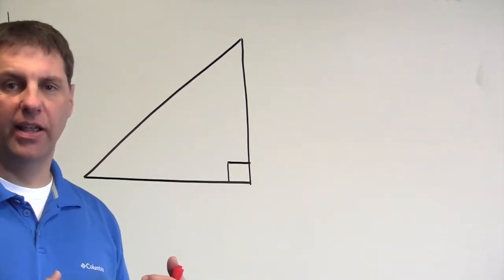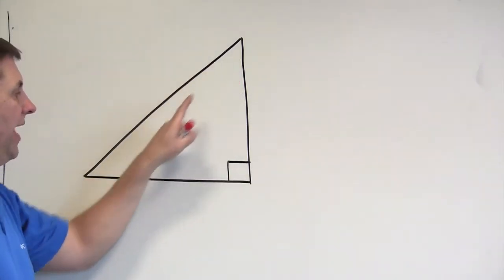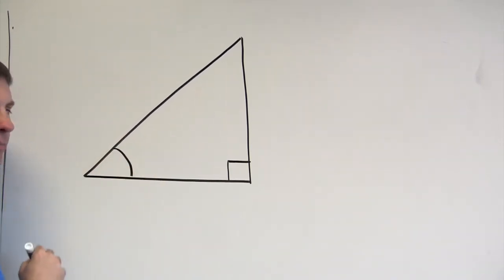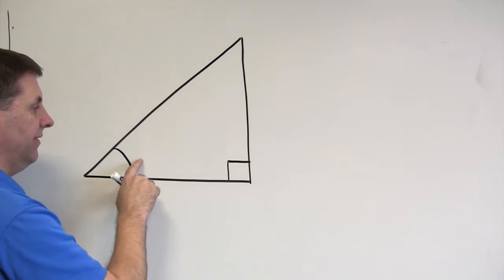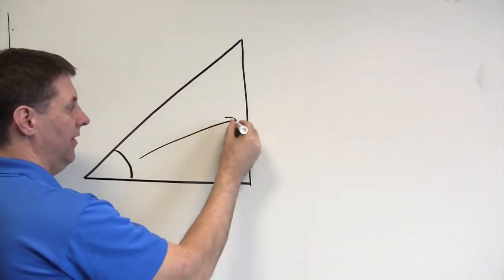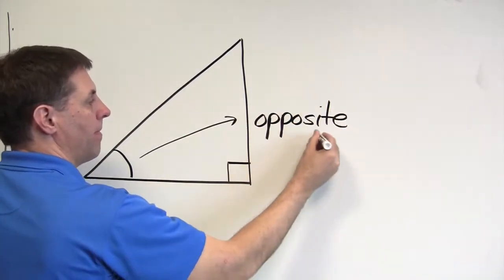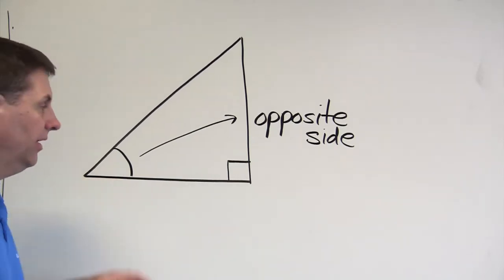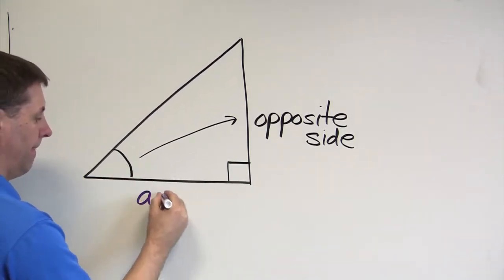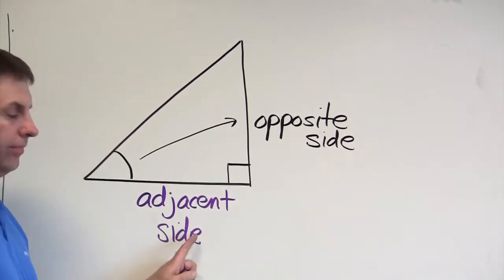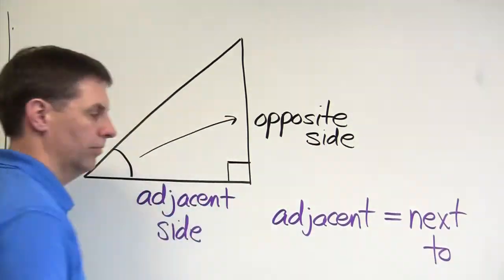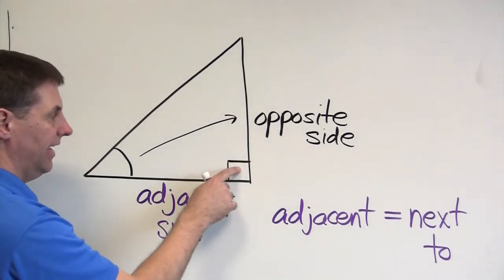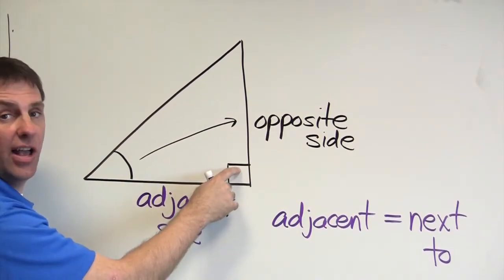The trig ratios are based on an angle of reference — one of the acute angles is your point of reference. If I'm talking about this angle, the opposite side is the side across from it. The adjacent side is the side next to the angle — adjacent means next to. In every right triangle, the hypotenuse is the side across from the 90-degree angle.